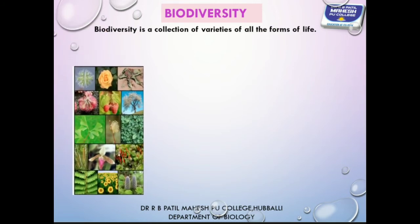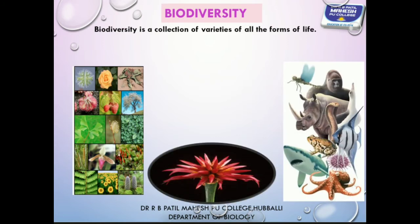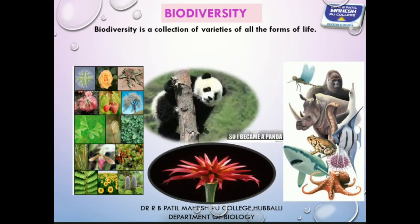Biodiversity is broadly classified into two types: plant diversity and animal diversity. Varieties of plants we call plant diversity, and varieties of animals we call animal diversity.